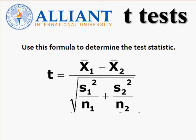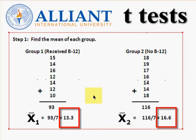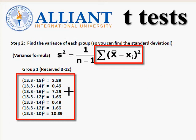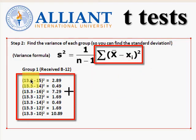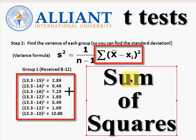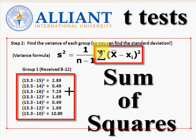Now we're going to plug and chug information into this formula. First thing you always do is find the mean — here's the mean of the first group and the mean of the second group. This part of the formula is very important: the mean subtracts each individual from the group. This whole process is commonly called the sum of squares. The big sigma means add them all up — take the mean minus each individual, square them, and add them all up. That's the sum of squares.